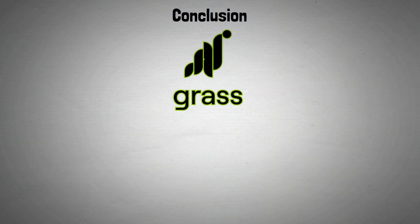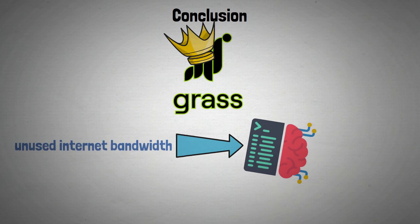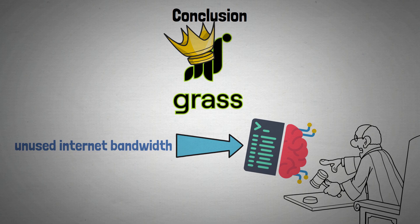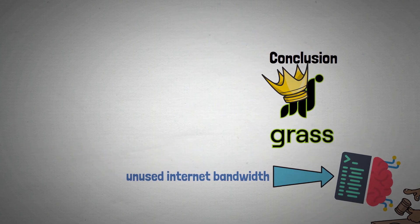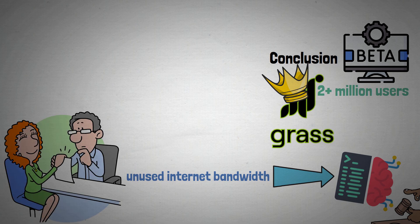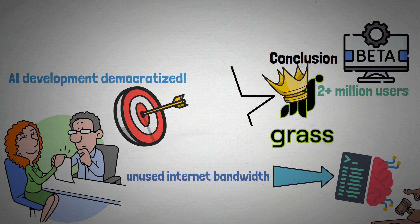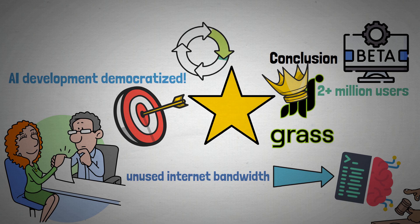In conclusion, GRASS is a unique solution that turns unused internet bandwidth into useful training data, democratizing the development of AI. With more than 2 million users in its beta, strong support from well-known investors, and a clear goal of democratizing access to AI development, GRASS shows great promise to transform the multi-billion dollar data market.